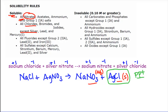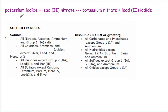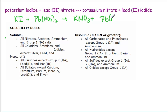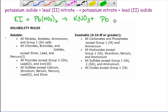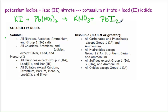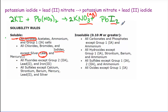Let's look at the lead iodide example. Here's our equation: potassium iodide plus lead nitrate gives potassium nitrate and lead iodide. We do need to balance that equation. Looking at our products: all nitrates are soluble, so potassium nitrate is aqueous. Then we look at iodides — all chlorides, bromides, and iodides are soluble except silver, lead, and mercury. So that means lead iodide is insoluble, making it my precipitate.